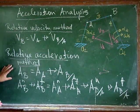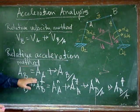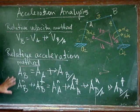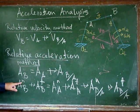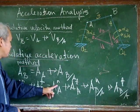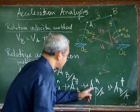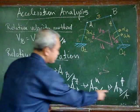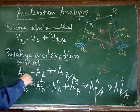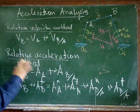The acceleration equation is similar: the acceleration of B equals the acceleration of A plus the acceleration of B with respect to A. Expanding into components, we have the normal acceleration of B plus the tangential acceleration of B equal to the normal acceleration of A plus the tangential acceleration of A plus the normal acceleration of B with respect to A plus the tangential acceleration of B with respect to A.